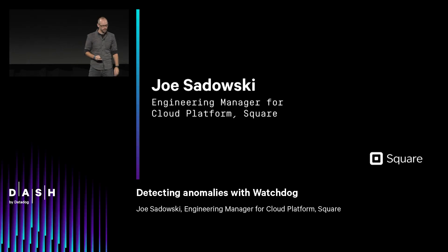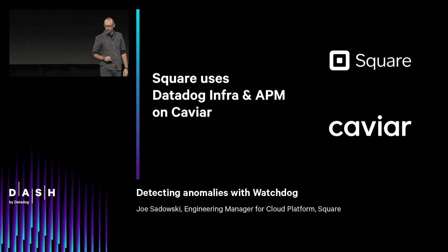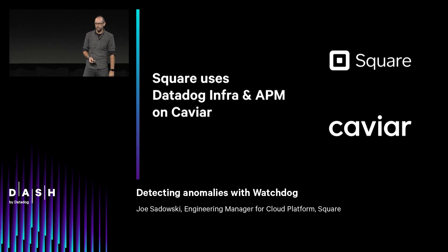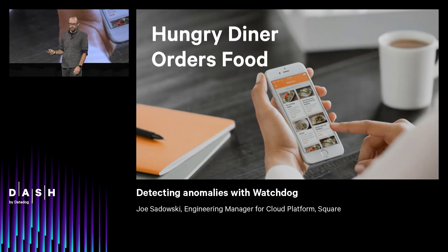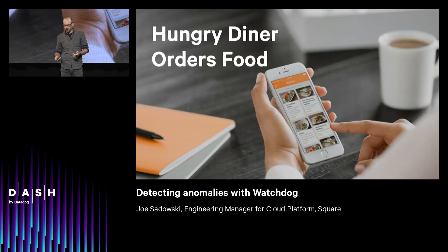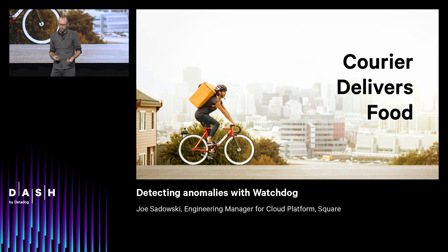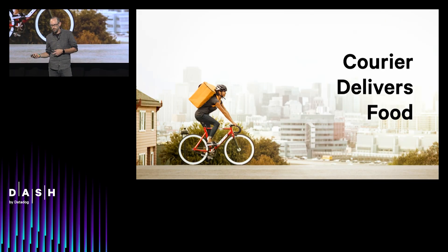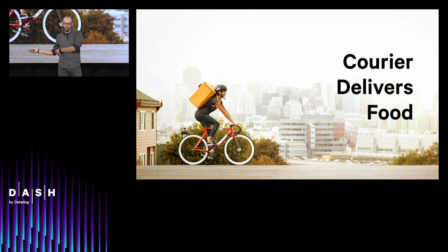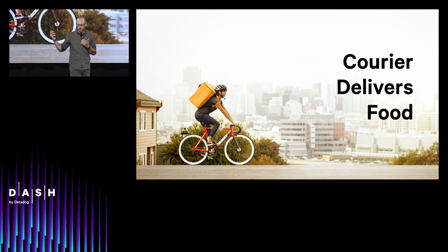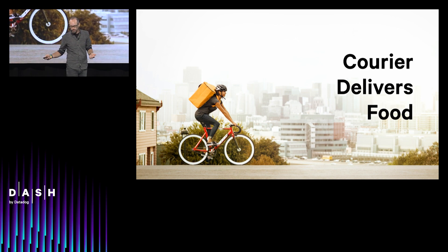So at Square, we primarily use Datadog to monitor Caviar, which is our food delivery business. For those of you unfamiliar with Caviar, it basically works like this: diners order food online, we tell the restaurant what to make, we dispatch a courier, the courier goes and picks up the food, brings it to you, and everybody has a great meal.